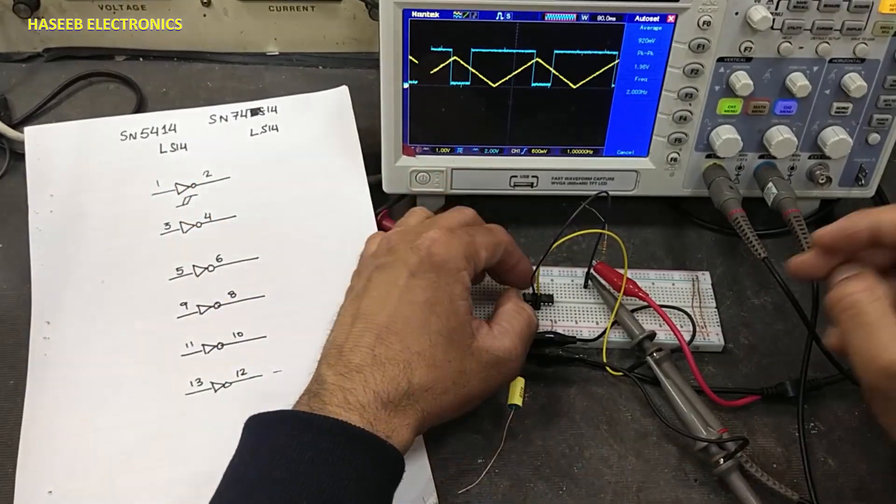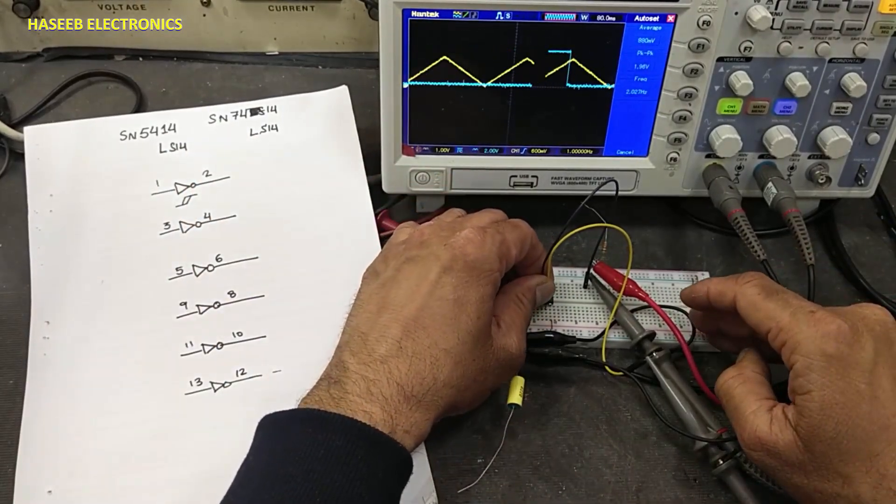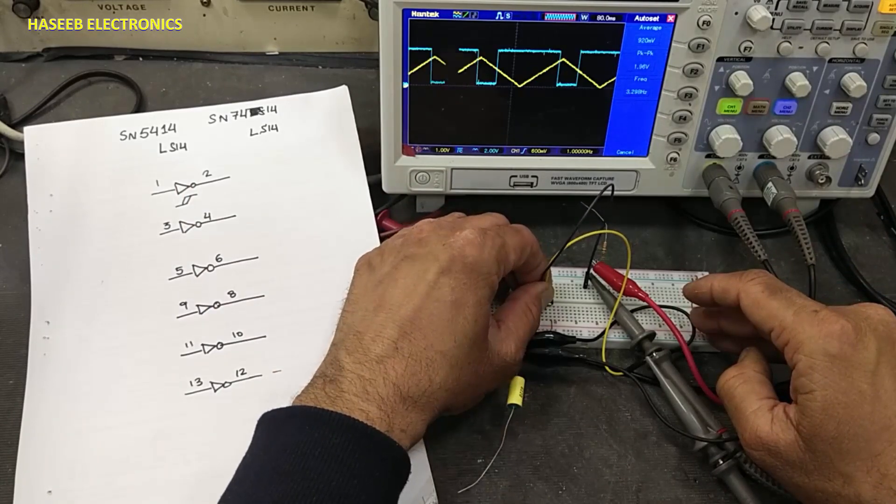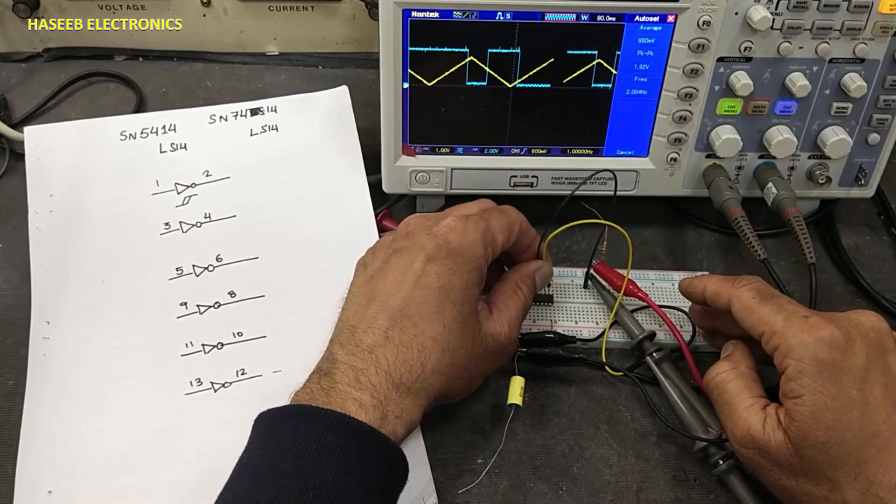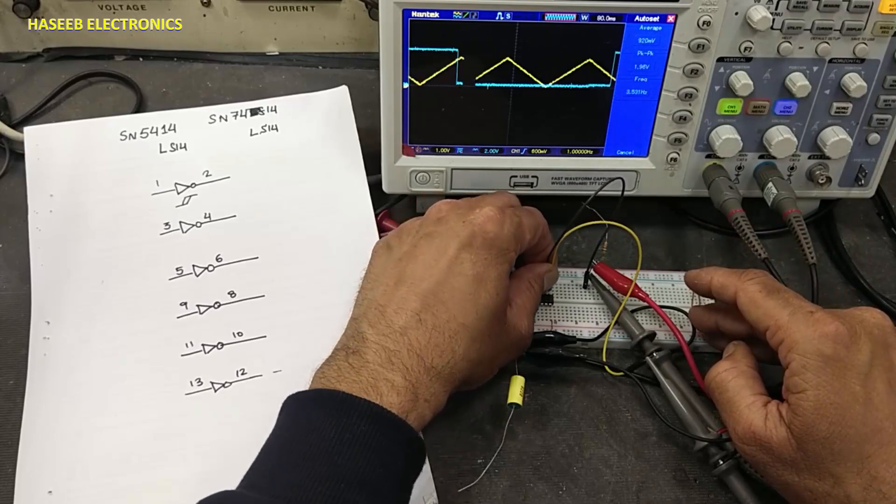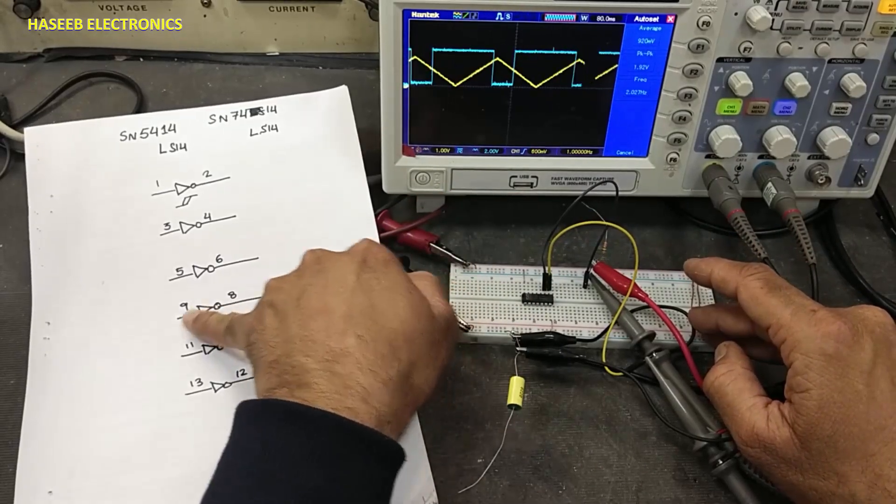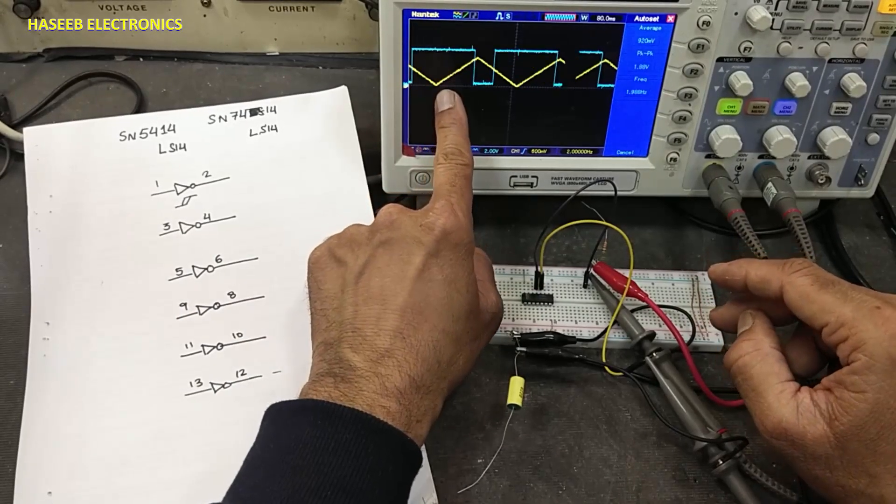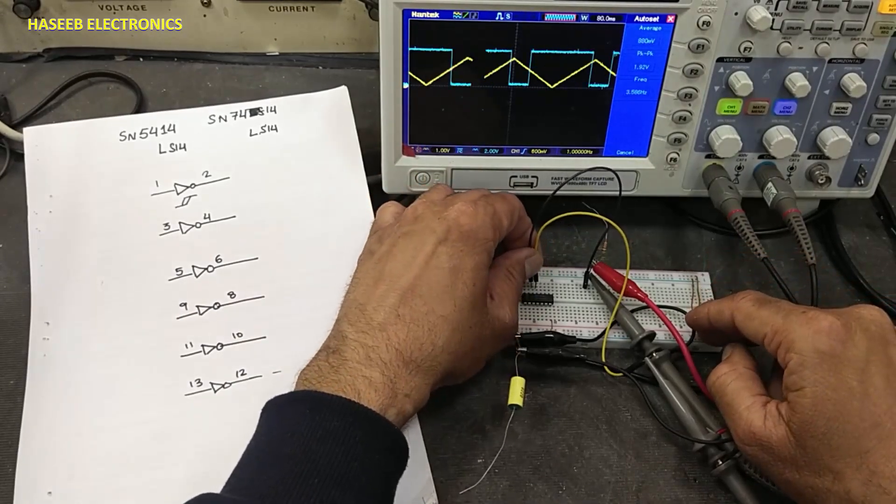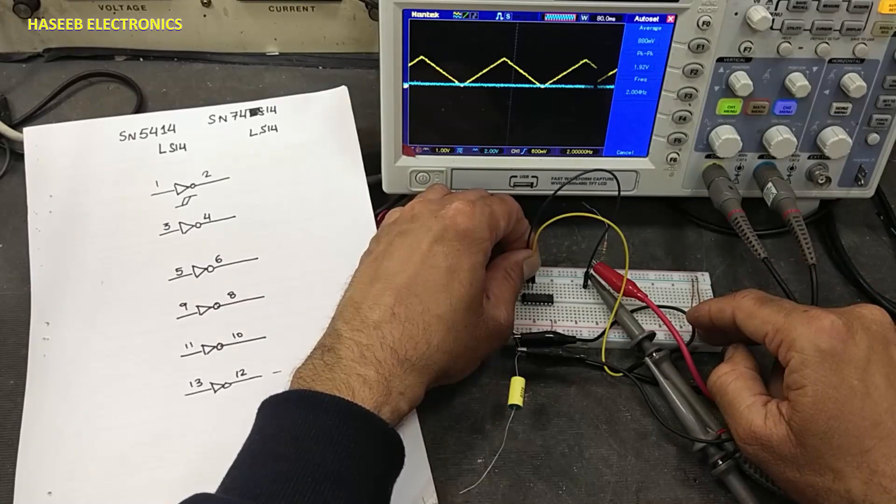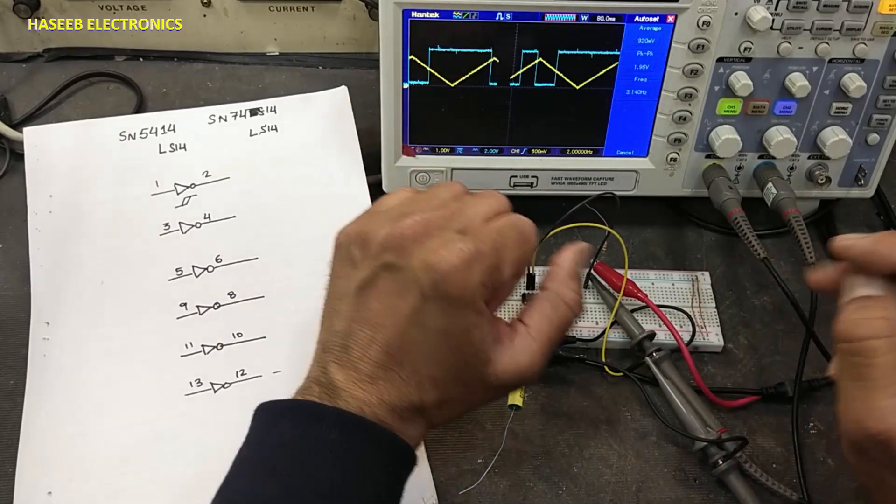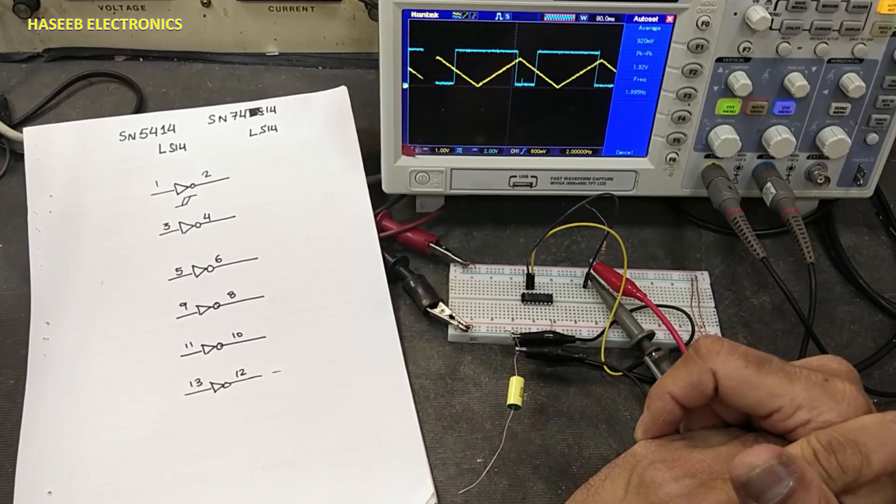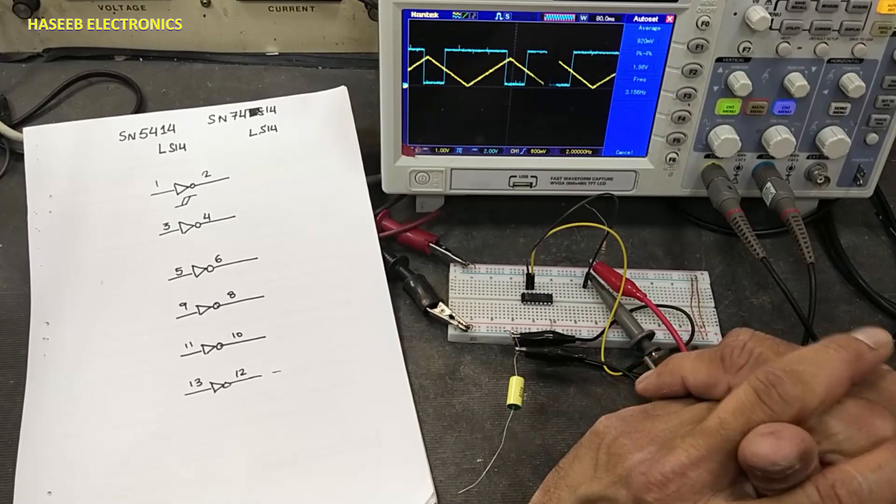One input, one output. Next is pins 5 and 6, then 8 and 9—pin 8 output, pin 9 input. Then 10 and 11, and 12 and 13. In this way we can verify the function of this IC.